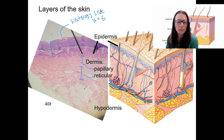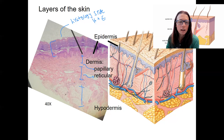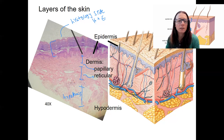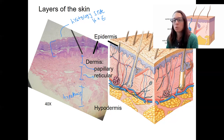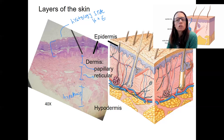You'll zoom in on that in lab. And here is the hypodermis. This view is only 40x — if you go in further, you can look at the papillary versus reticular layer in more detail and also see sweat glands in there. We will do that in lab. So the next video, I will dive in and zoom into the epidermis and talk more about those layers.